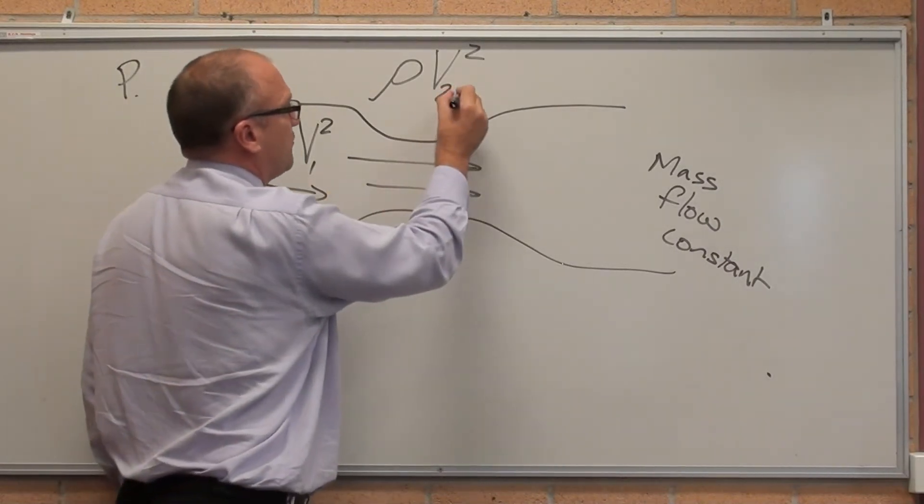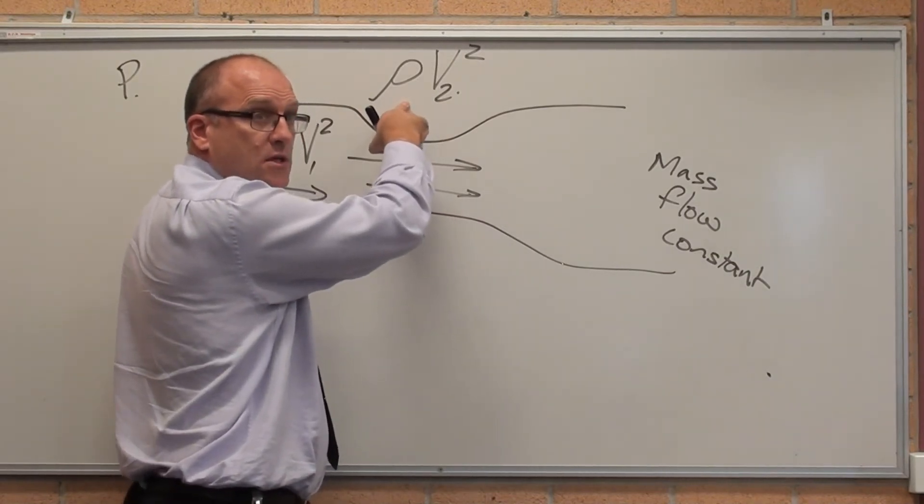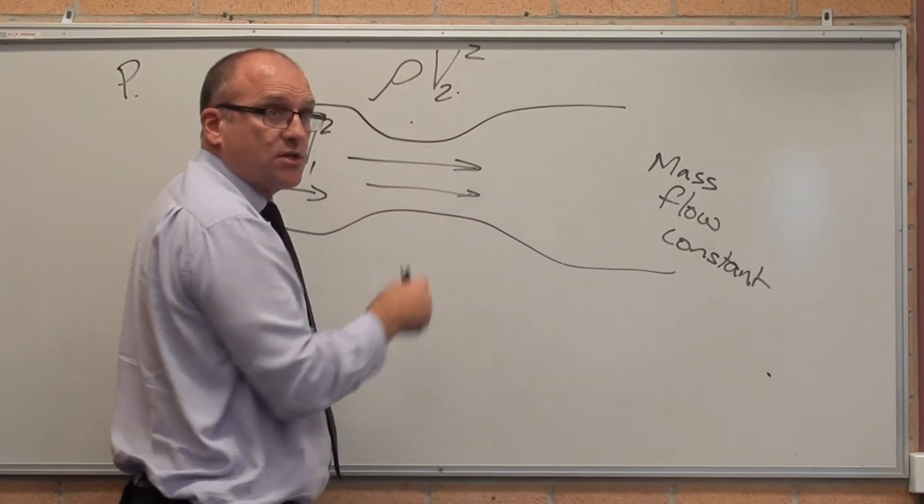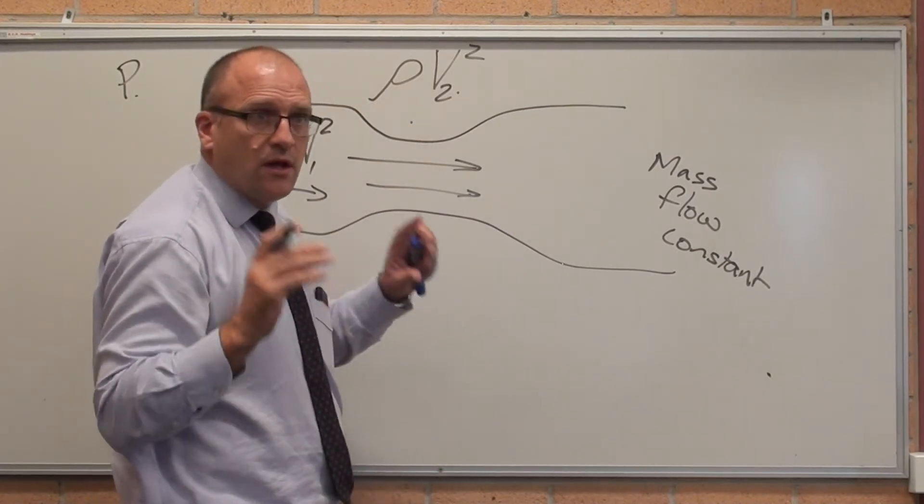So what happens is, as the velocity increases, the density decreases. As the density decreases, the pressure decreases, because there's less air in the same volume. Yes? That's Bernoulli's theorem.